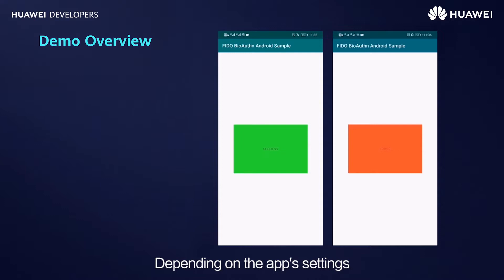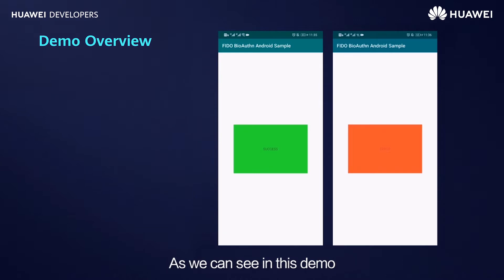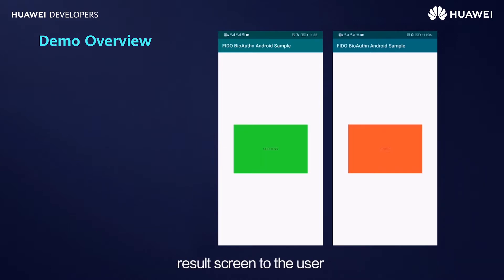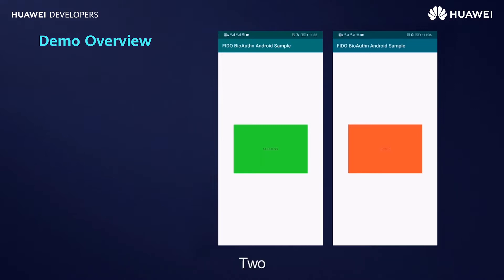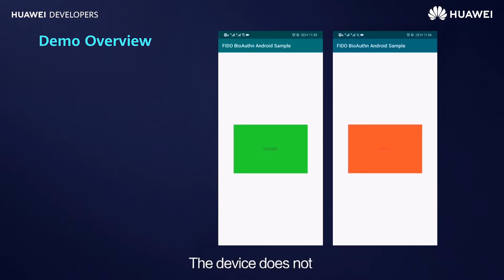Depending on the app settings, the user can use their fingerprints or face for biometric authentication. The app displays the authentication result screen to the user after biometric authentication is completed. There are three possible authentication results: the biometric authentication is successful; the biometric authentication fails; or the device does not support biometric authentication.